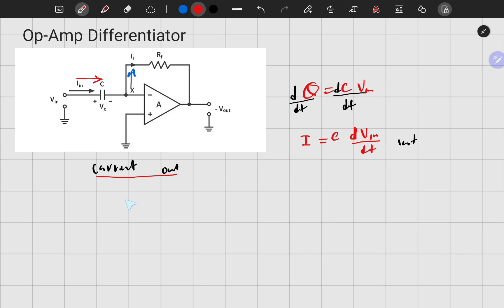Current out will be the voltage here, let me call it V minus, minus V out, all over the resistor RF. This is just Ohm's law. And we know that V minus